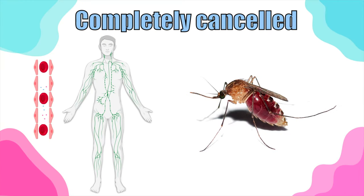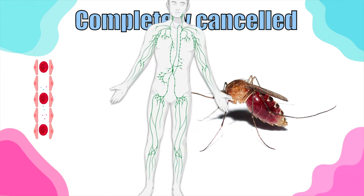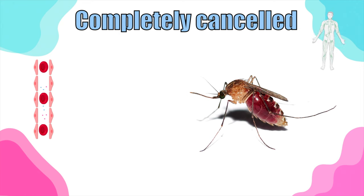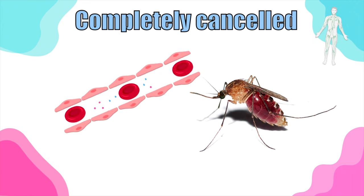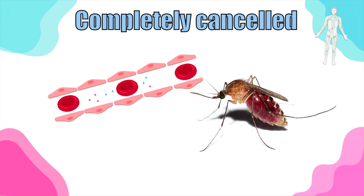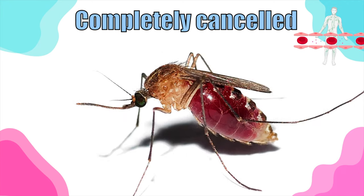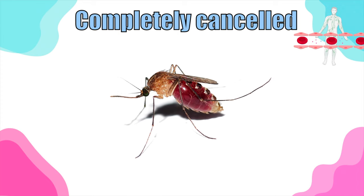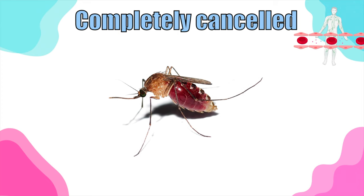There are two other large topics that have been completely canceled. The first is the lymphatic system — there are no more lymphatic system questions in your 2023 exam. Also, the part about the formation of tissue fluid and the formation of lymph has been canceled. Another large topic that used to be a very large part of paper four — malaria and sickle cell anemia — has also been completely removed from the 2023 syllabus.